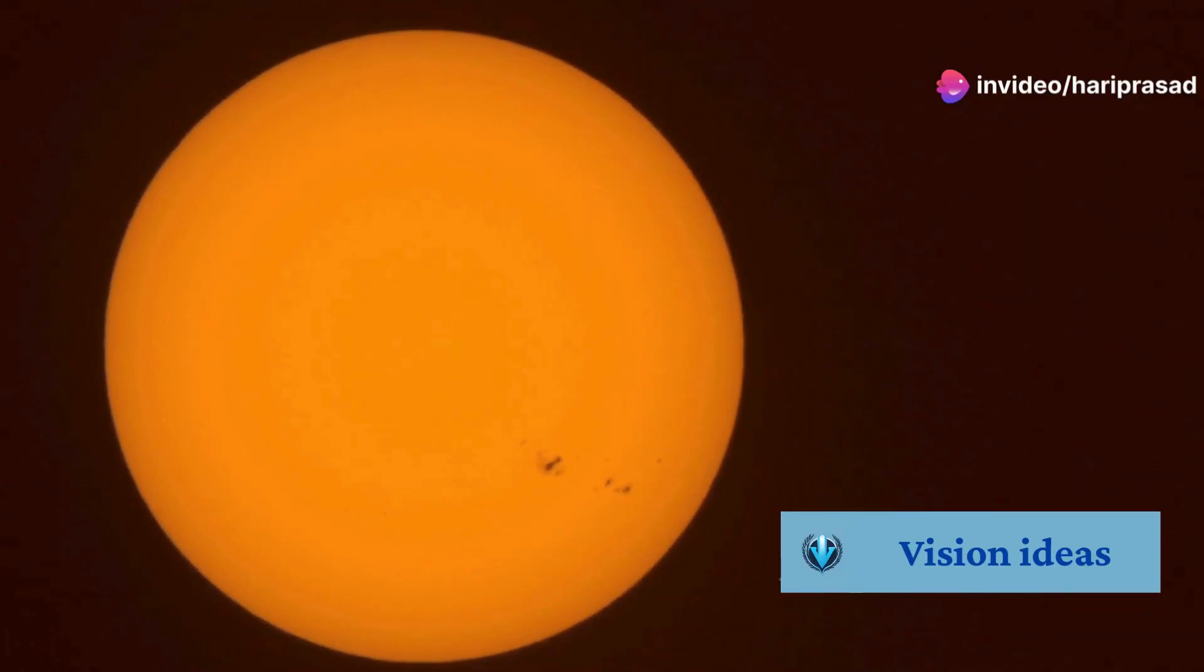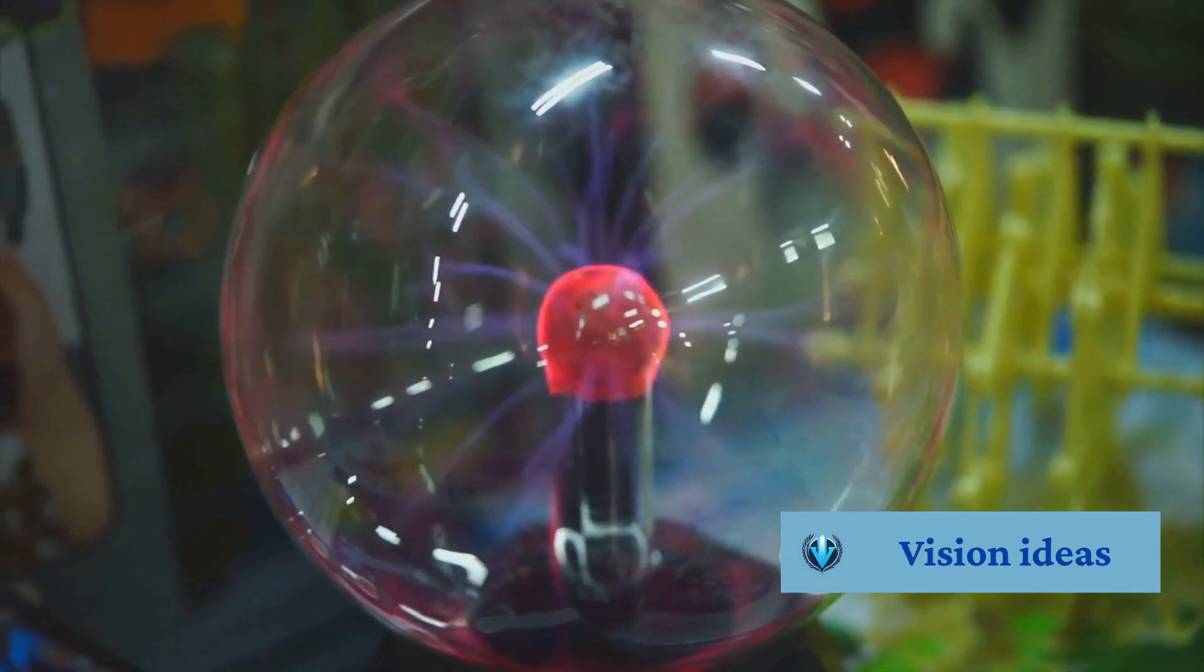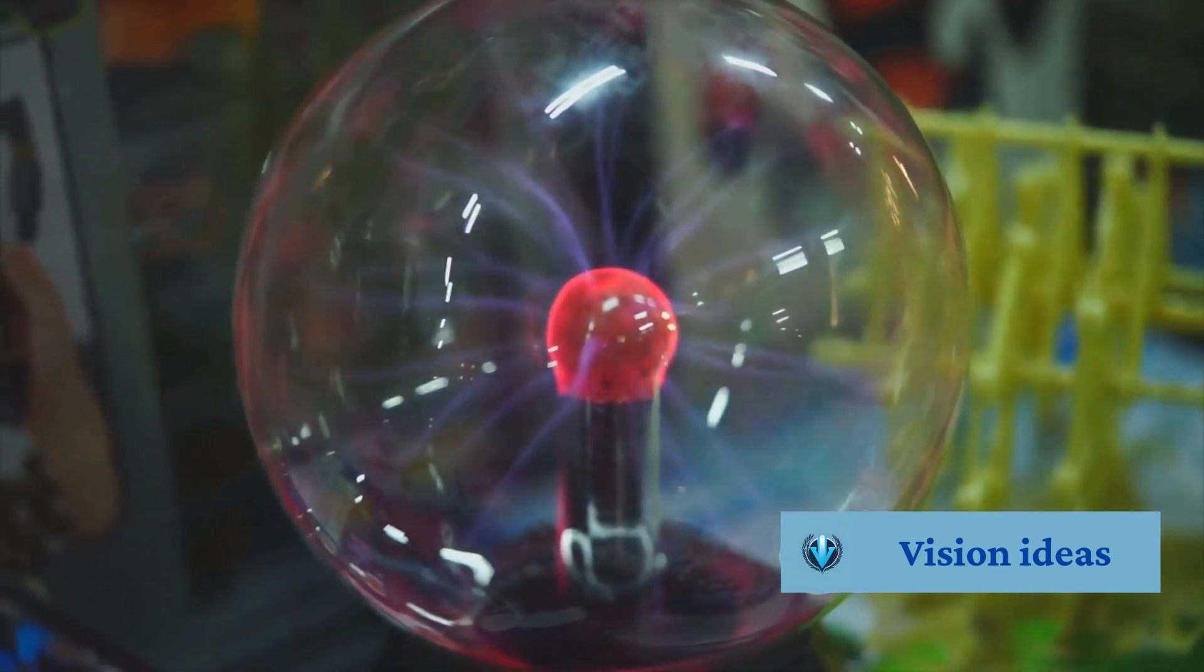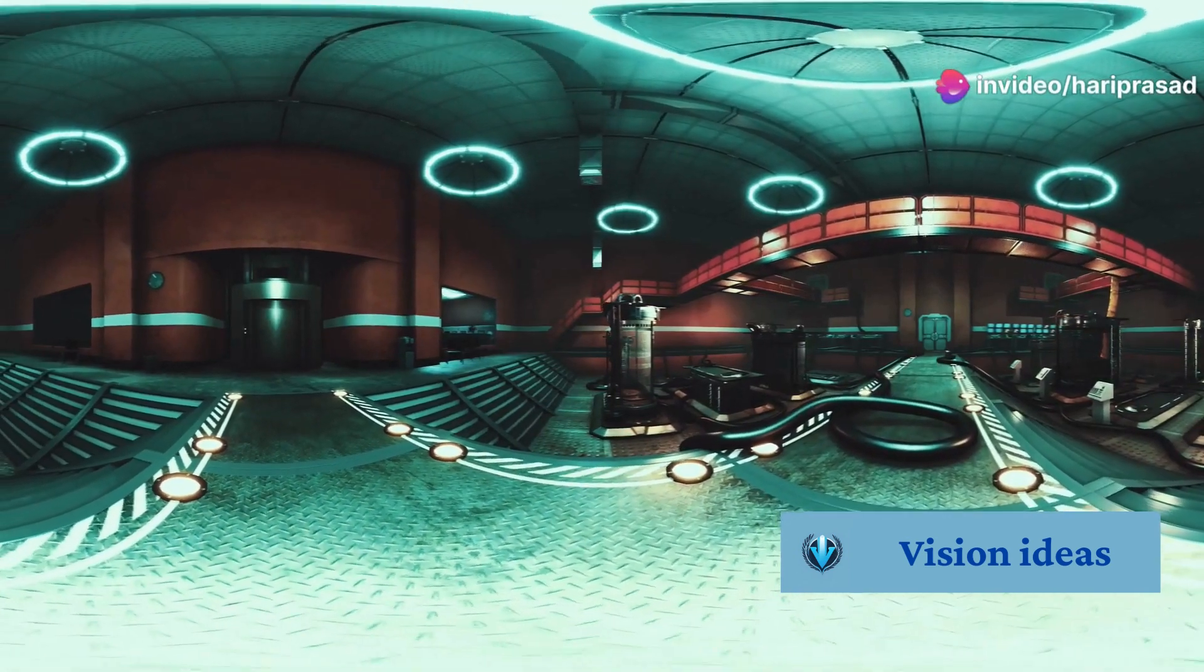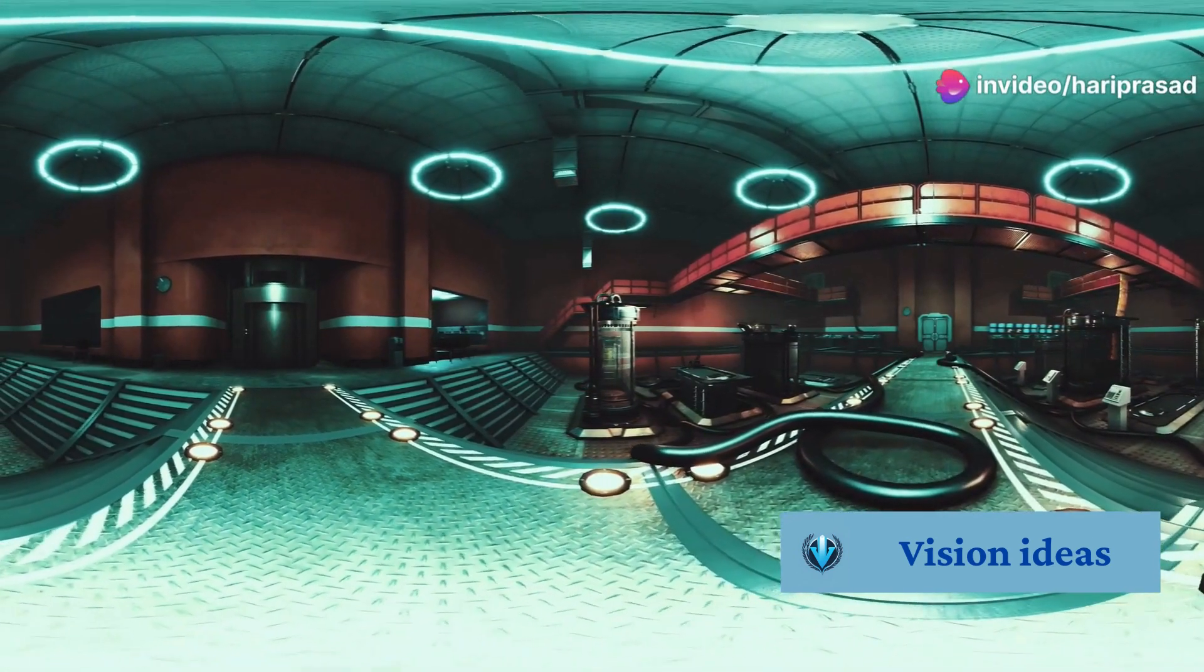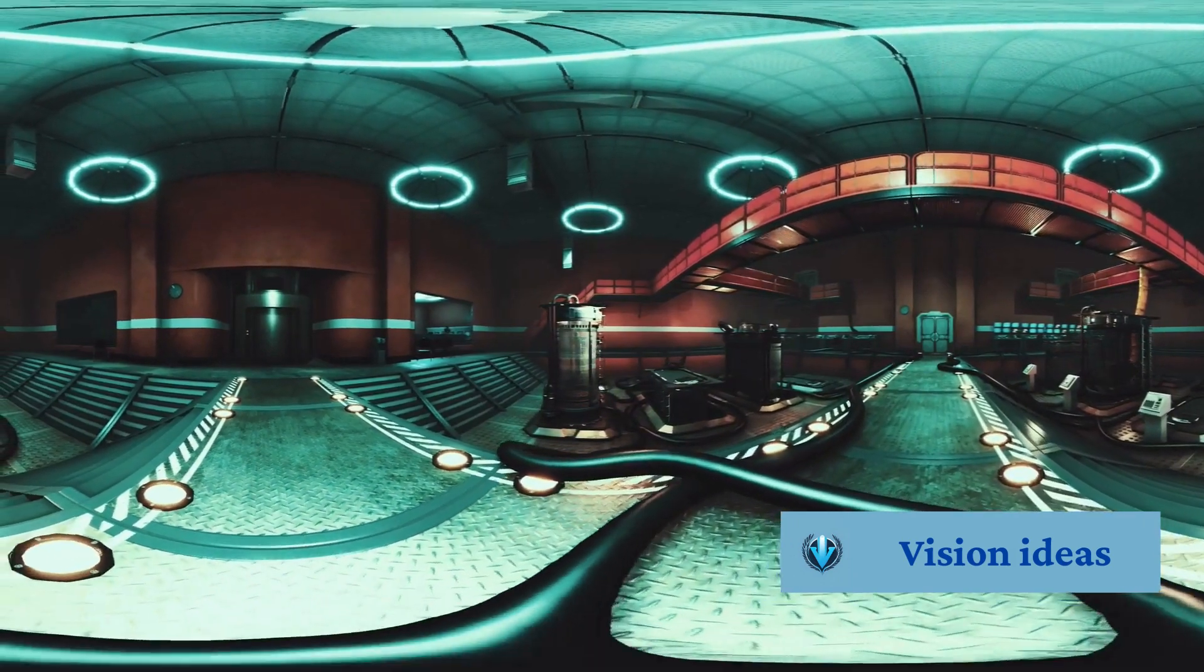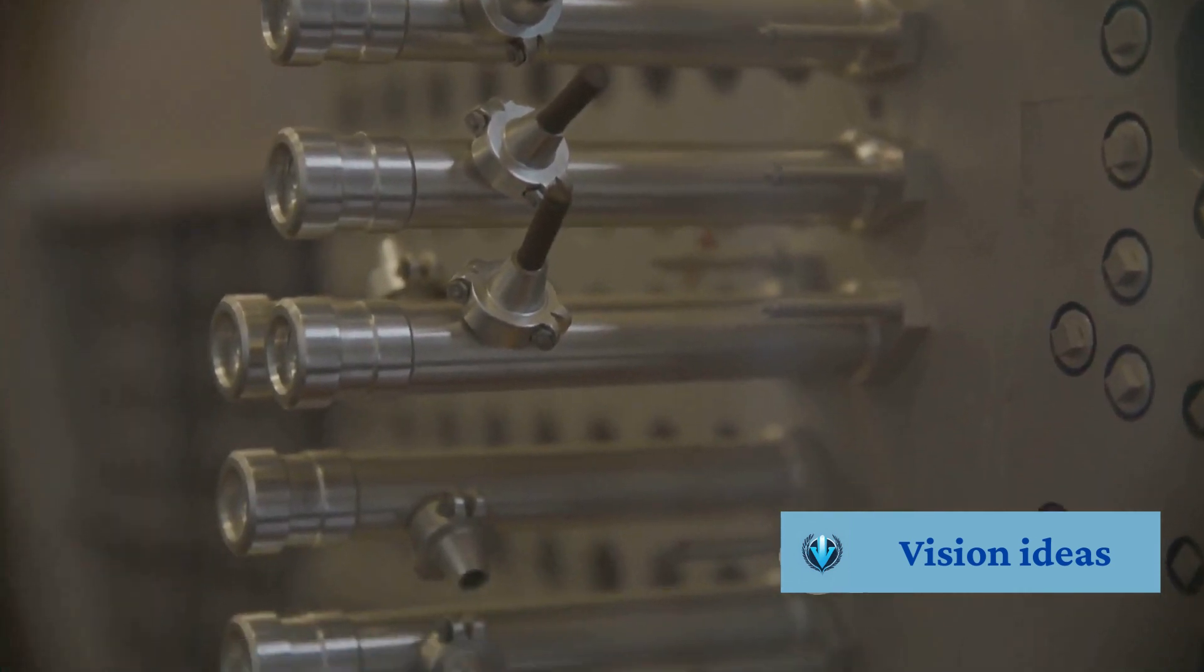Next, powerful magnetic fields are used to confine and control the superheated plasma. These fields act like invisible walls, preventing the plasma from touching the reactor walls and losing energy. Once the plasma is hot and dense enough, the deuterium and tritium nuclei begin to collide and fuse, releasing tremendous amounts of energy. This energy can then be harnessed to generate electricity.